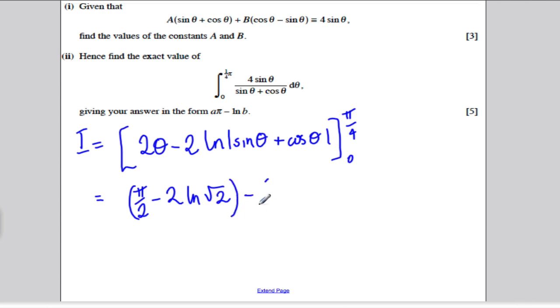And I put in 0. I subtract the answer when I put in 0. If I put in 0 here, I get 0. If I put in 0 to sine, I get 0. If I put in 0 here, I get 1. ln 1 is 0. So, all of this is 0. And I simply get the answer pi over 2 minus 2 ln root 2.